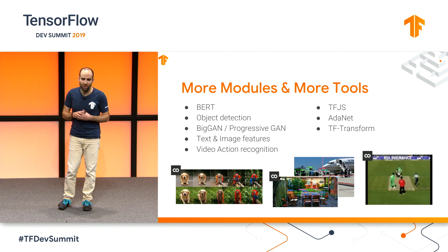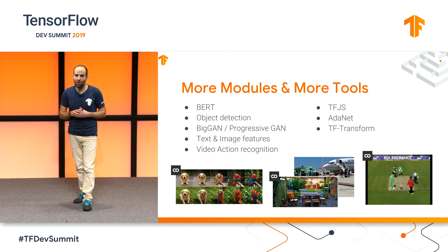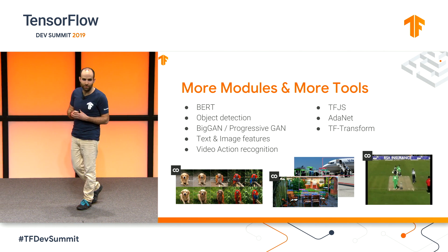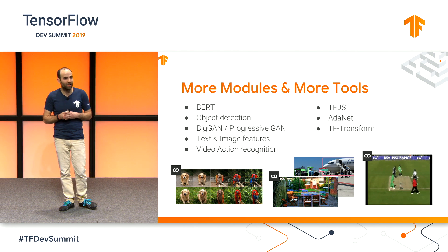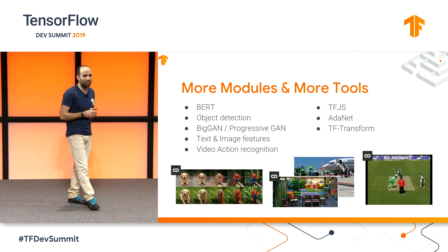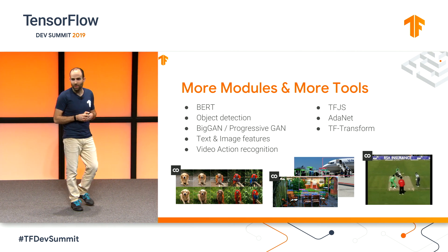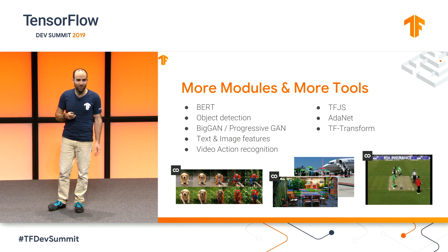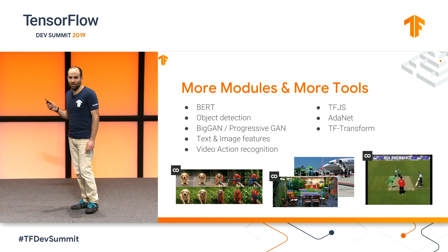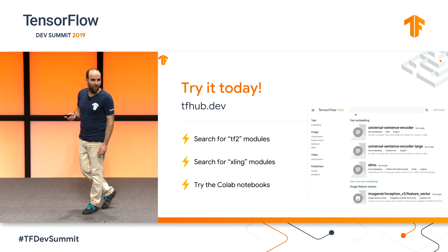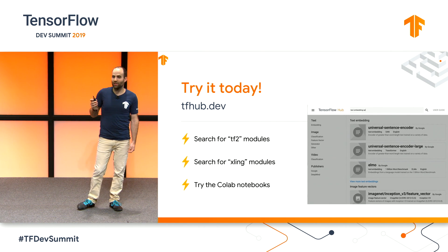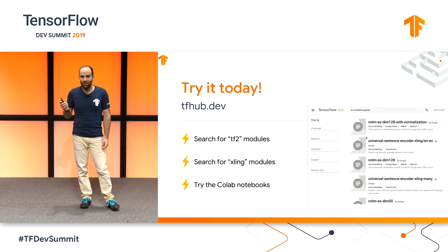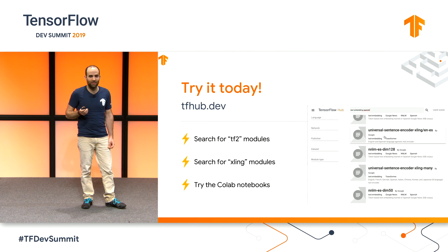We have a command line utility to convert a module into a tf.js model. Hub models can be used together with Adnet, which is a library for AutoML. And they can also be used inside tf.transform. So if you want to try it, you can go to tfhub.dev and search for modules. Most of them include a link where you can see them in action.